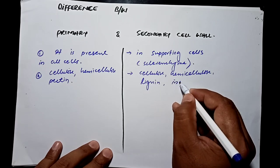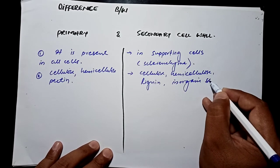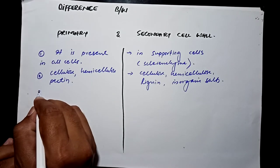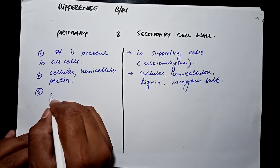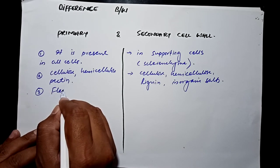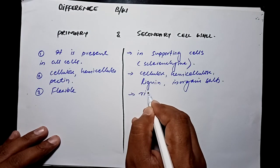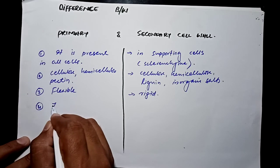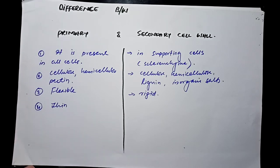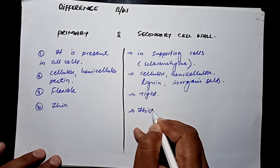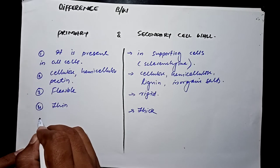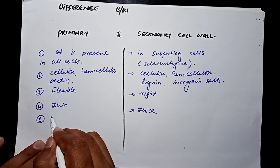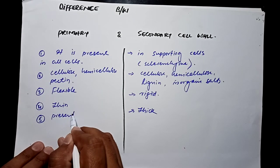So this is the composition of the primary and secondary cell wall. Primary cell wall is flexible while secondary is rigid. Primary is thin, secondary is thick. Primary is present outside the cell membrane.